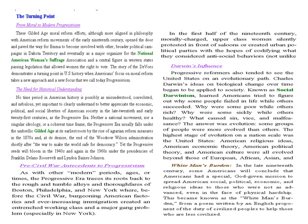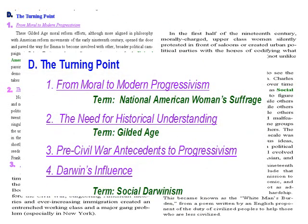Here is 'the turning point' with all four of its sub-points. The outline would show: D. The Turning Point, with sub-points — one, from moral to modern progressivism; two, the need for historical understanding; three, pre-Civil War antecedents to progressivism; and four, Darwin's influence. These four points fully describe what Dr. Ross Nazel means by 'the turning point' heading. Should Dr. Nazel give a quiz asking for a brief essay on the meaning of the turning point, the student's answer would have to address all four of these points and the terms to define in order to earn full credit.